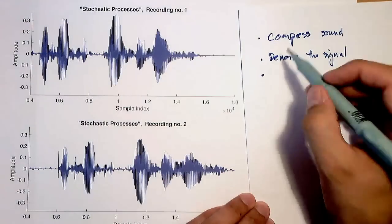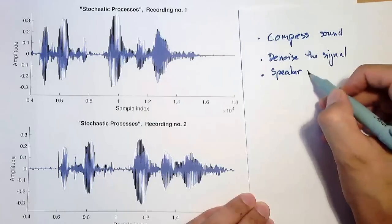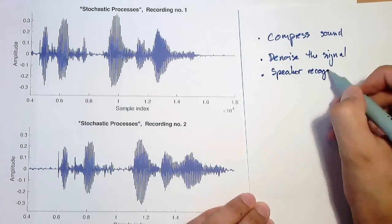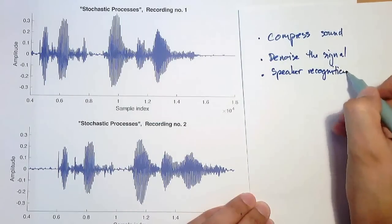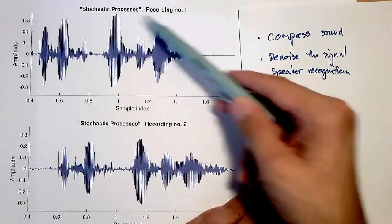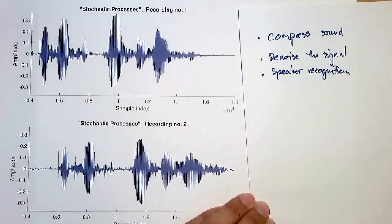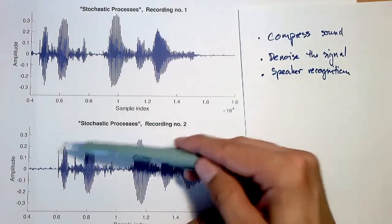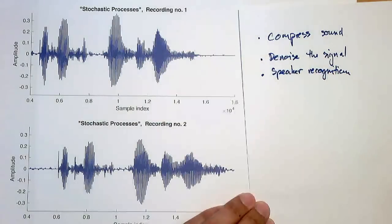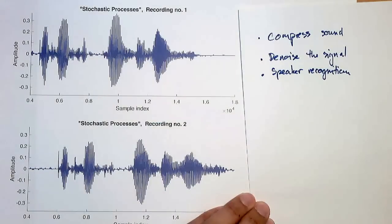And finally, the example I would like to mention here is speaker recognition. So say you're building a security system and you want to make sure that it's only the teacher of stochastic processes who come in. You would ask them to utter the word stochastic processes. And you would record a signal like this or like that. And now the system would have to decide, is it the right person? So here it would have to look for specific features in the signal.